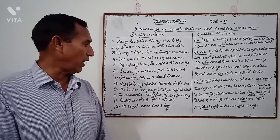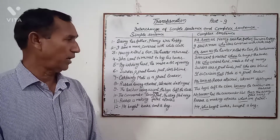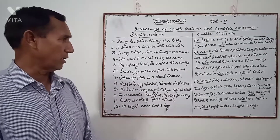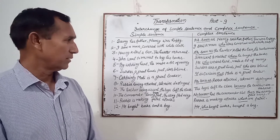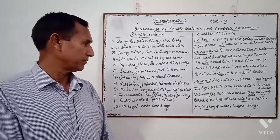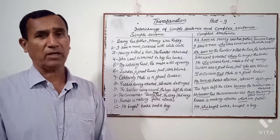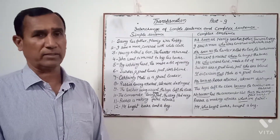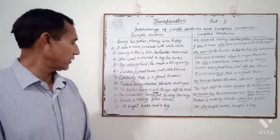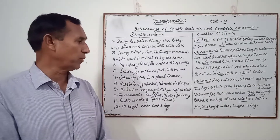Example: "The commander having been shot, the army fled away." Complex: "As soon as the commander was shot, the army fled away." "No sooner had the commander been shot than the army fled away." "Russia is making fatal attacks." Complex: "Russia is making attacks which are fatal." "He bought books and a bag."